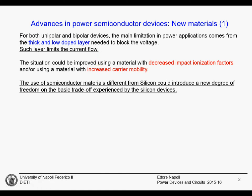The main idea to remove this problem is using a different material. This material, different from silicon, should have decreased impact ionization factors, meaning that avalanche is more difficult to happen. Or — and we can have both if we are lucky — we could have increased carrier mobility, because higher mobility means lower resistance. If we can use a different semiconductor material, we could use this new degree of freedom and improve the performance with respect to silicon devices.